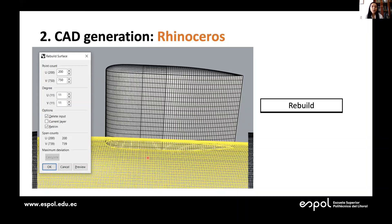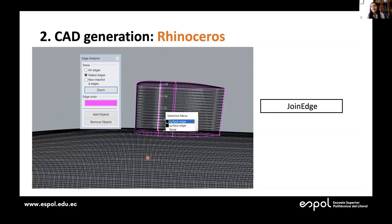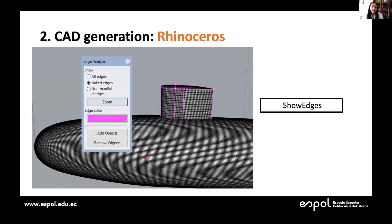Once all surfaces have a similar number of points, we join them together. For this, we select every single edge at every intersection between surfaces. To help identify unjoined edges, we use the Show Edges command — if all geometry is closed, there will be no magenta lines; everything has to be black. At this point we have the surface geometry, so the next step is converting it to mesh.